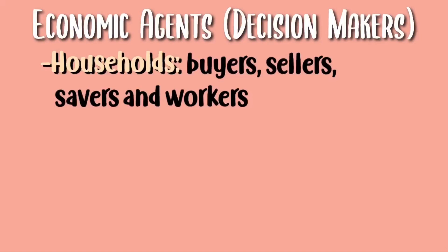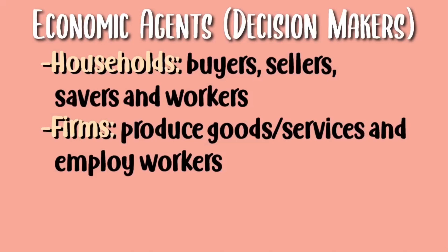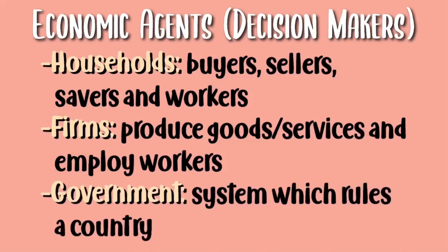Now let's look at the different types of economic agents. First, we have households, and these are buyers, sellers, savers, and workers. Next are firms, and they produce goods and services and employ the workers. And then we have the government, which is a system that rules a country.